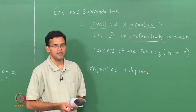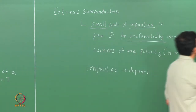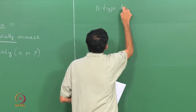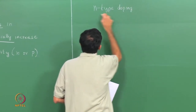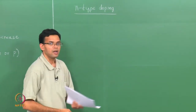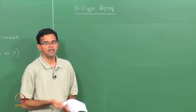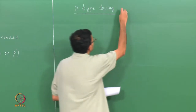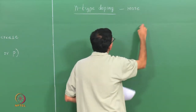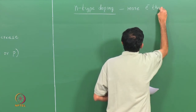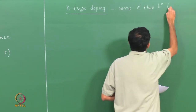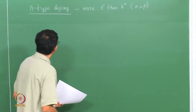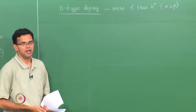First, we will start with n-type doping. As the name implies, in the case of n-type doping we preferentially increase the number of electrons. So we have more electrons than holes — another way of stating this is n will be greater than p.